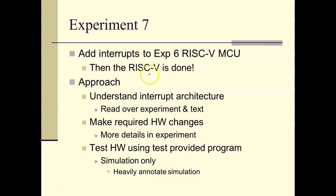Experiment 7 builds on experiment 6 by adding interrupt capability to the RISC-V. This is the last hardware modification needed for the RISC-V — after this, you're done. You need to understand the interrupt architecture by reading the experiment text, make the required hardware changes detailed in the experiment, and then test it using provided programs.